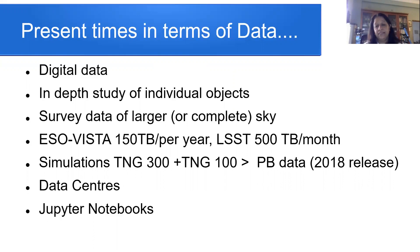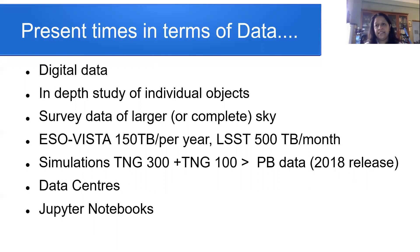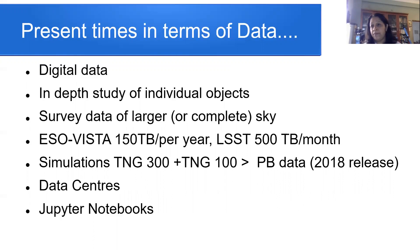The LSST telescope — the Vera C. Rubin telescope — would produce about 500 terabytes per month. You also have data from simulations; for example, TNG 300 gives you more than a few petabytes of data — that's the 2018 release. Because you have such large datasets, they need to be housed in data centers. It's not just one data center — you could have many mirrored data centers, which mirror the same data so that users can access it from various sources.